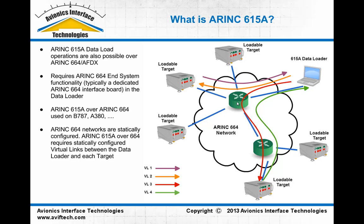The relation to ERINC-615A is that 615A defines a way to do 615A operations over ERINC-664 in addition to Ethernet. ERINC-615A is used on programs like the Boeing 787, the Airbus A380, and others to do data load operations specifically over ERINC-664 and AFDX networks. If ERINC-664 is being used instead of standard Ethernet, the data loader device actually has to have an ERINC-664 specific end system in it to manage the ERINC-664 specific protocol.